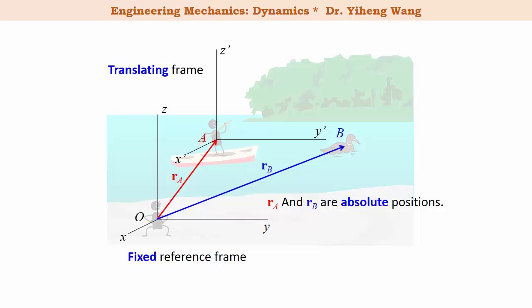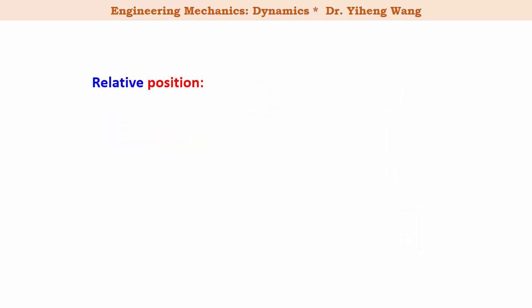So in the eyes of this person on the boat, the position of the duck is represented by a position vector originated from him, position vector r_B/A, which means the relative position of B relative to the observer A. We learned vector addition already, and we learned about the parallelogram law and triangle rule, so we can easily tell that this vector r_B/A equals to vector r_B minus vector r_A. Again, the relative position r of B relative to A equals to r_B minus r_A.